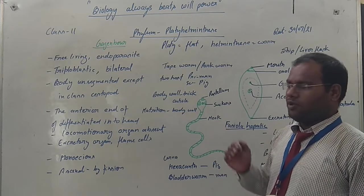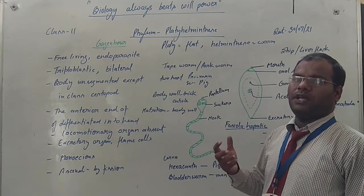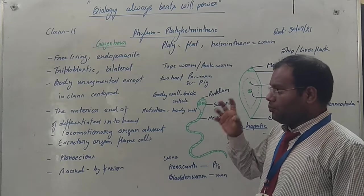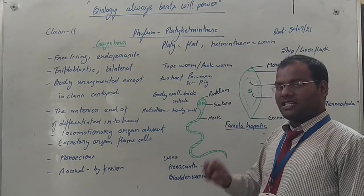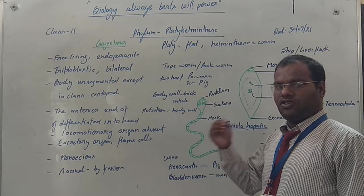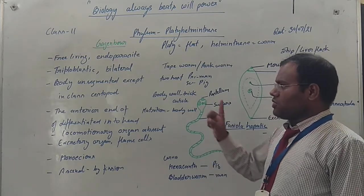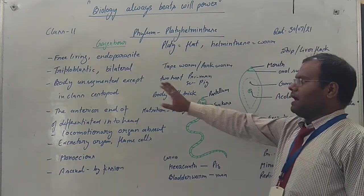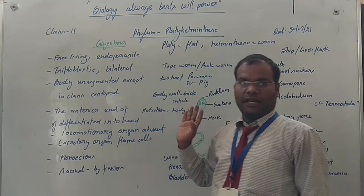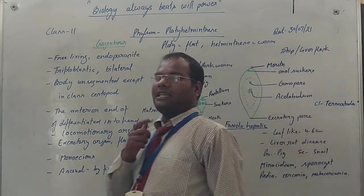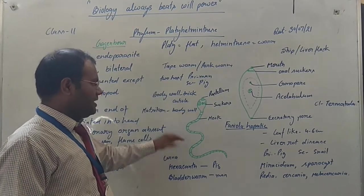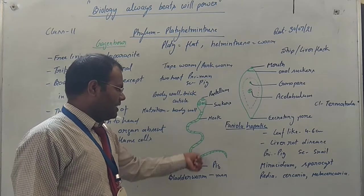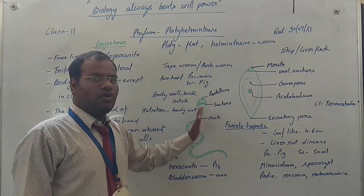This is a most important phylum because cephalization — the formation of brain and head — starts from this phylum. Prominent eyes formation also starts from this phylum. These are triploblastic animals and organs possess bilateral symmetry. The body is unsegmented, but in Taenia solium the body appears segmented into many pieces — however, these are not true segments.